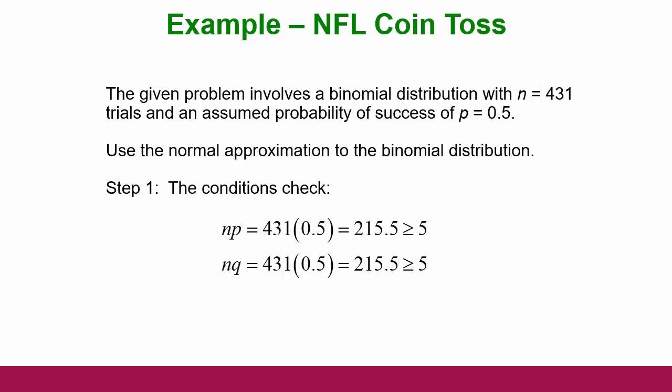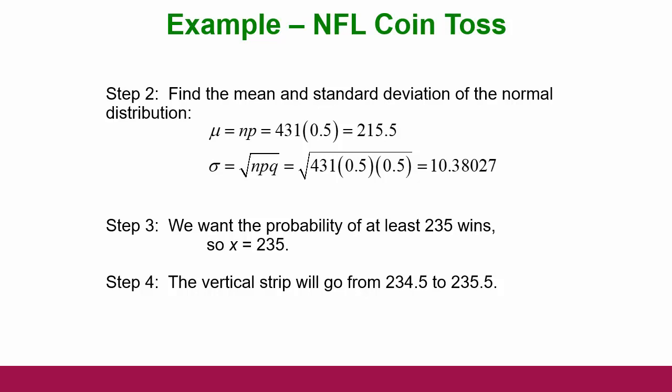We calculate the mean: 431 times 0.5 gives us 215.5, which makes sense — if there's a 50/50 chance of winning and you do something 431 times, you'd expect to win half of them. The standard deviation is 10.38. We want to know the probability of at least 235 wins, so X is 235. We would do a vertical strip from 234.5 to 235.5 for exactly 235 — but at least means 235 and above.